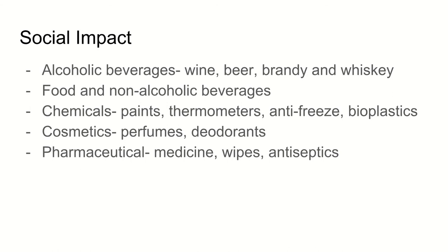Finally, now that with this example we have produced 25,200 tons per year of ethanol, these are some ways that it can benefit our society. Our intention was to use it for alcoholic beverages like wine, beer, brandy, whiskey, etc. But it also has applications in food and non-alcoholic beverages, chemicals such as paints, thermometers, antifreeze, and bioplastics, cosmetics like perfumes and deodorants, and pharmaceuticals like medicine, wipes, or antiseptics.